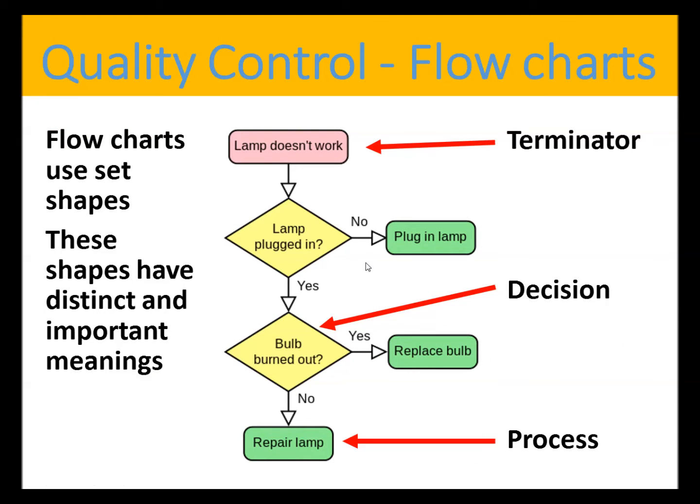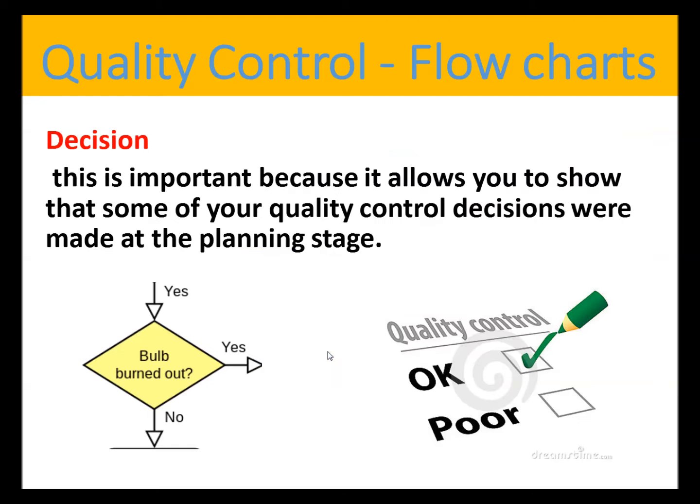The flowcharts in the exam will use these three set shapes. They will use this shape for terminator, for start and finish. They will use a square or a rectangle for process, and they will use this diamond shape for decision. And we'll see that later on when we look at the exam question. In this question, they'd actually given you those shapes, but those you need to know.